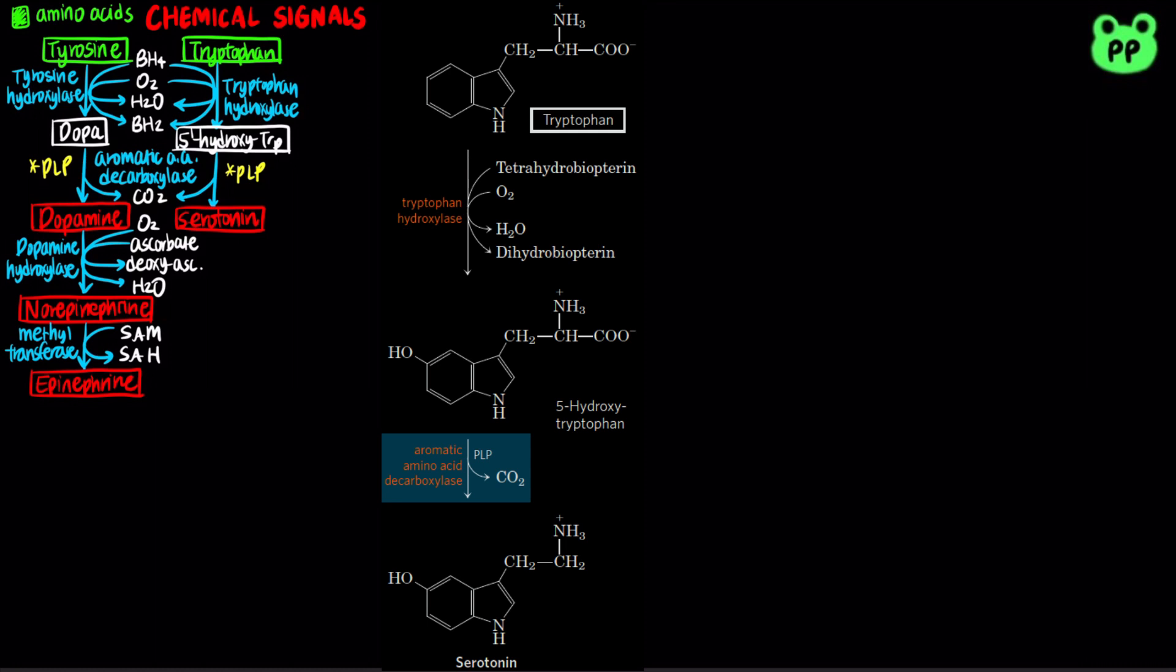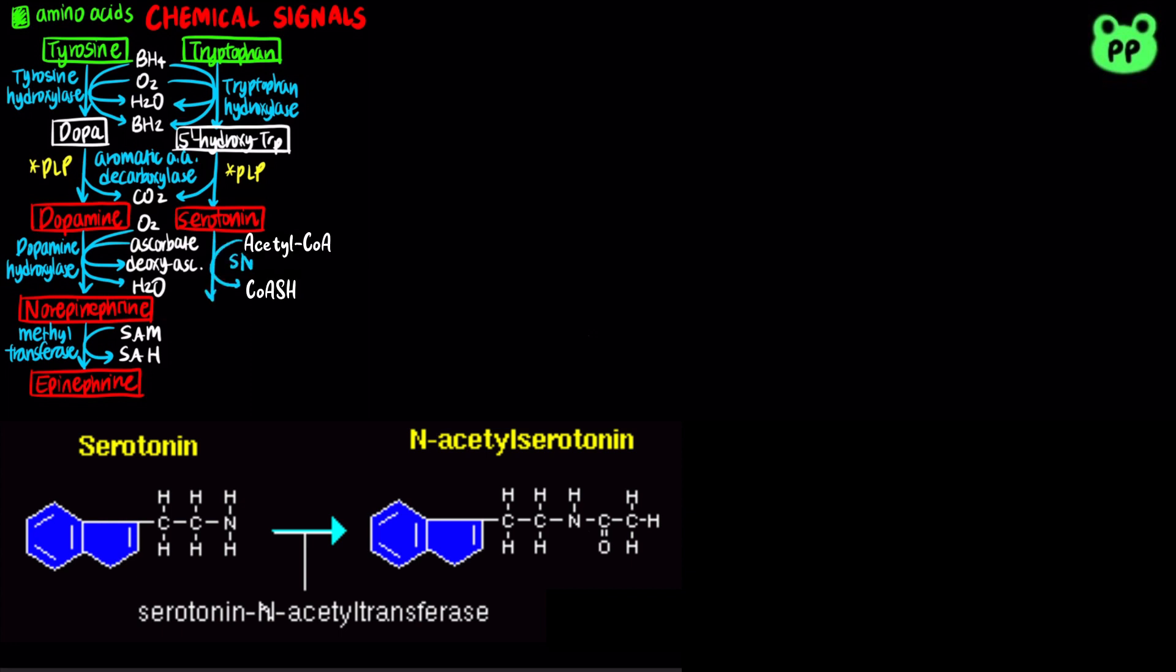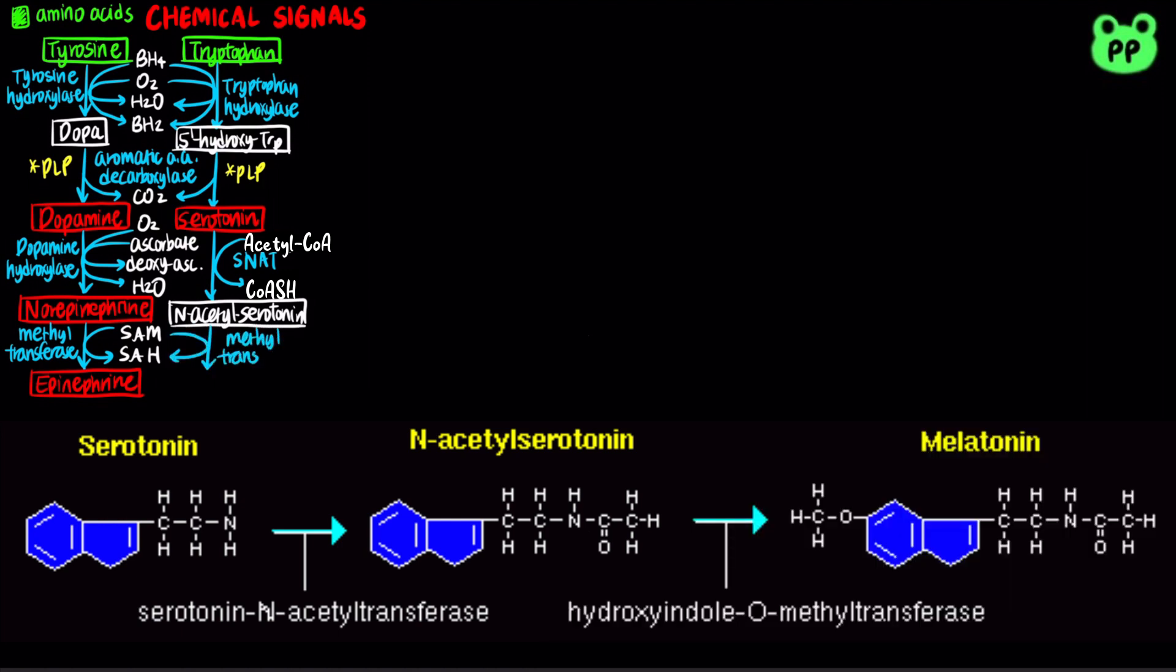Serotonin can be further converted to melatonin in two steps. First, serotonin N-acetyltransferase, abbreviated as SNAT, transfers an acetyl group from acetyl-CoA onto the amino group of serotonin, producing N-acetyl serotonin, which is subsequently methylated by methyltransferase to produce melatonin.